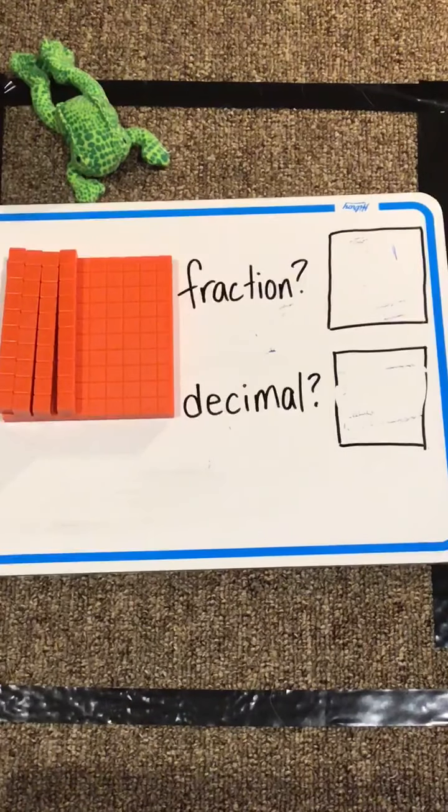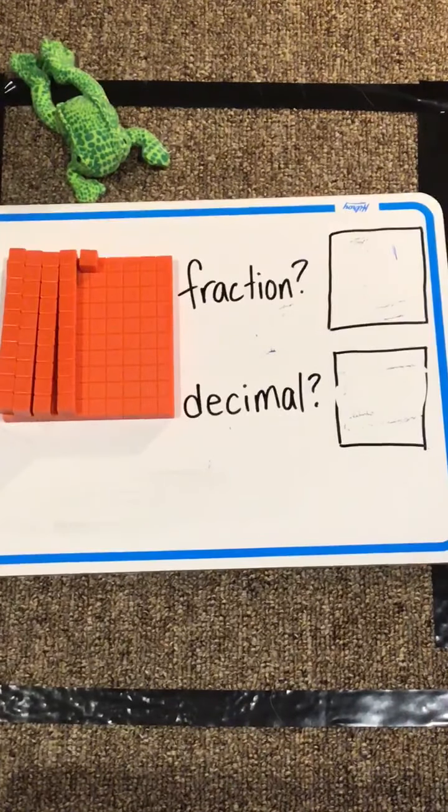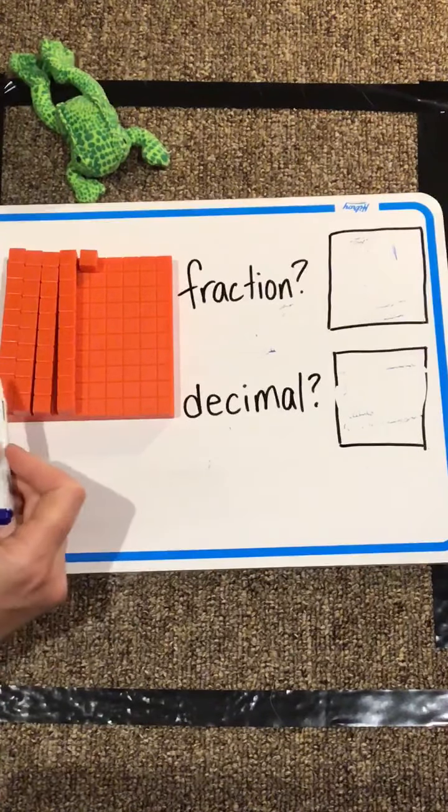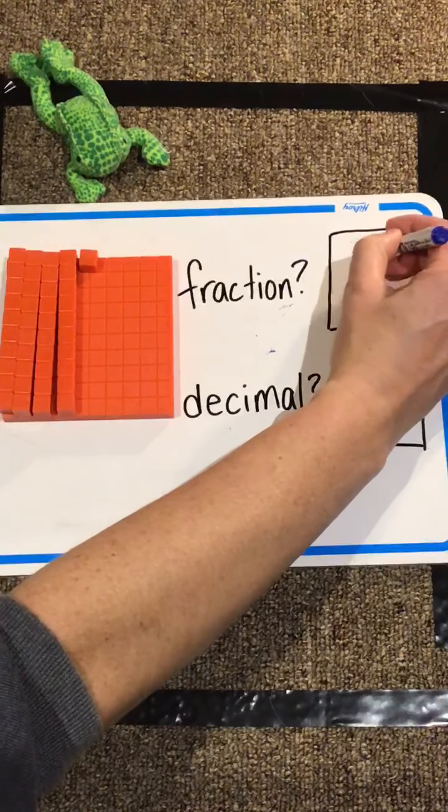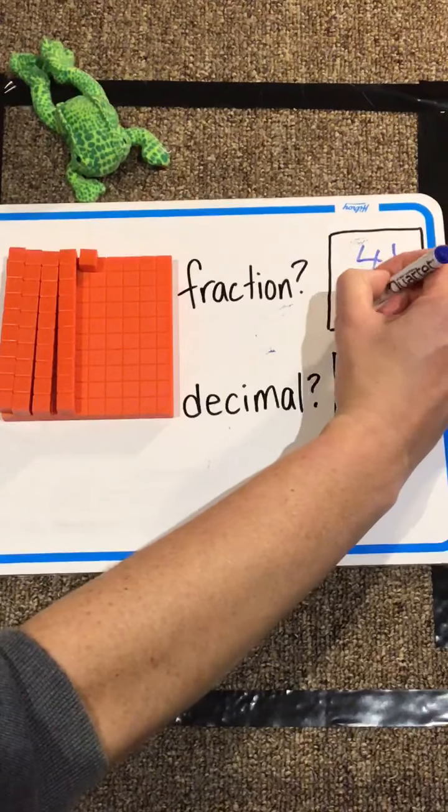Now, what if we have this one? Ten, twenty, thirty, forty, plus one, forty-one out of one hundred.